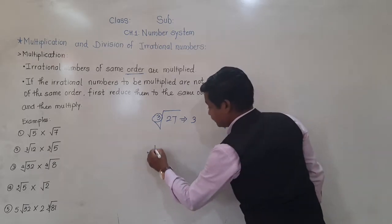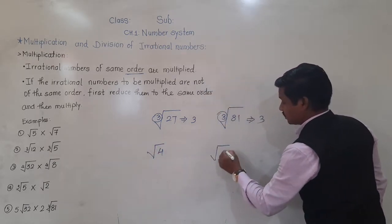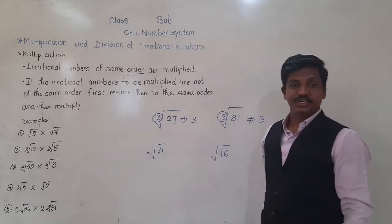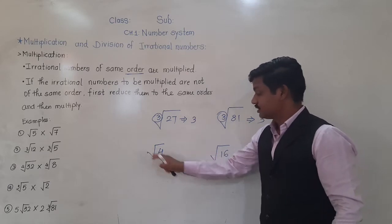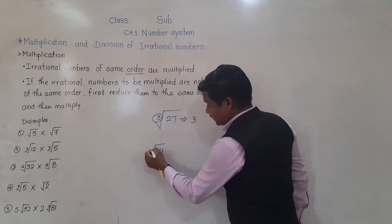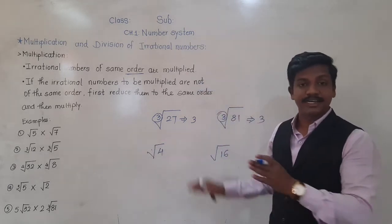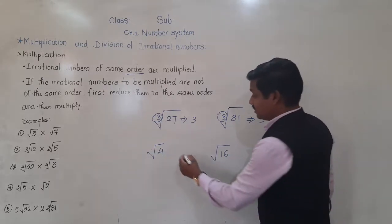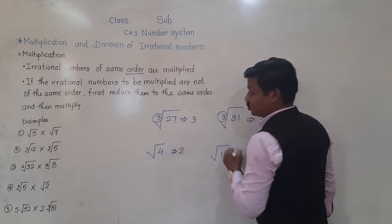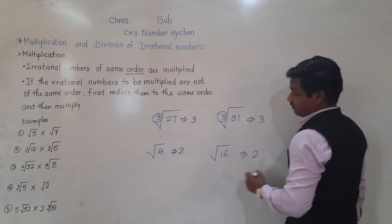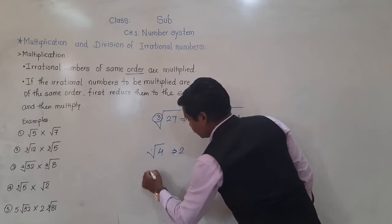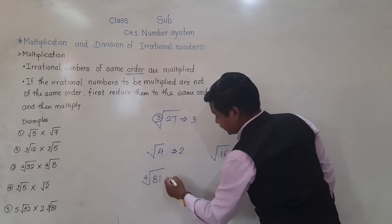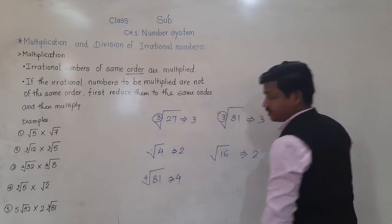If it is like this and the number is not written here — generally the number written here is called the order of that irrational number. But here it is not written, that means the order of this irrational number is 2. Here also 2. If it is written as 4 — 4th root of 81 — then the order of this irrational number is 4.